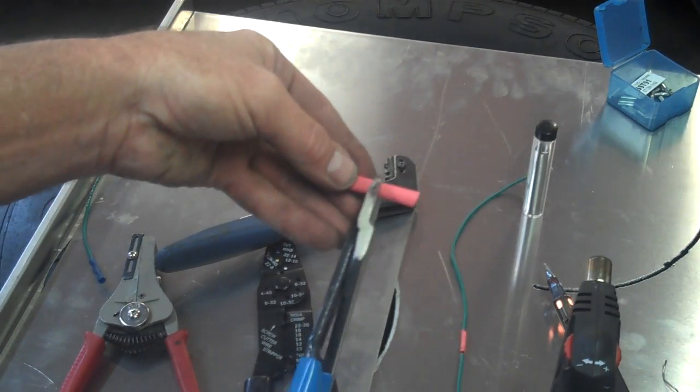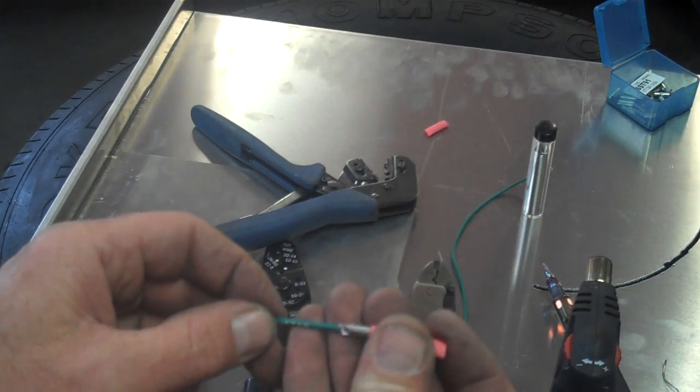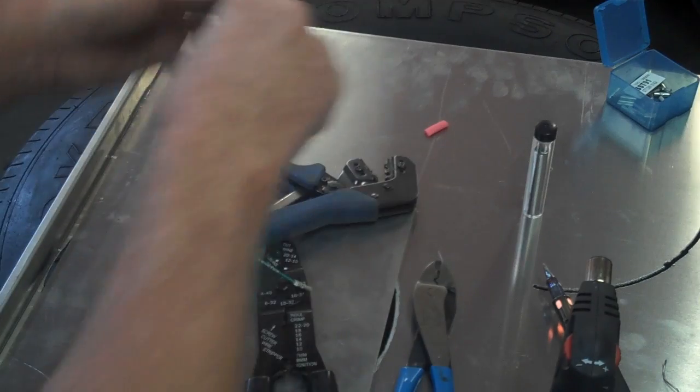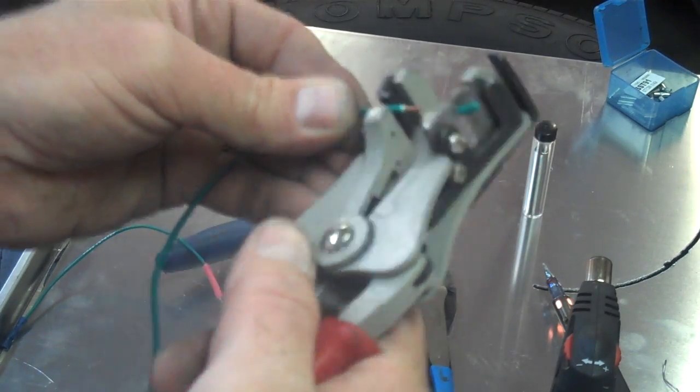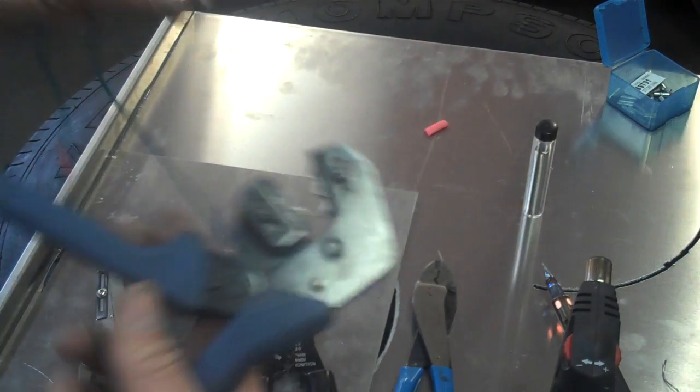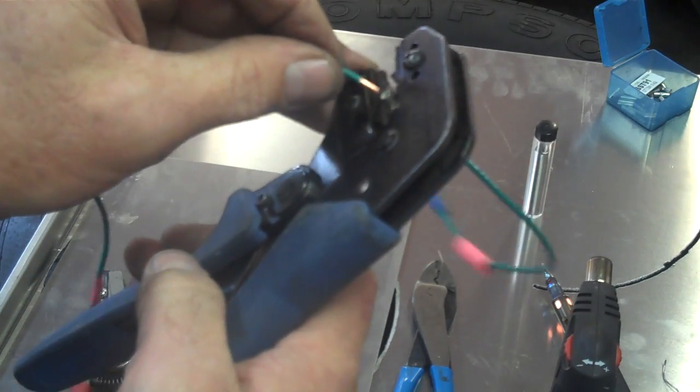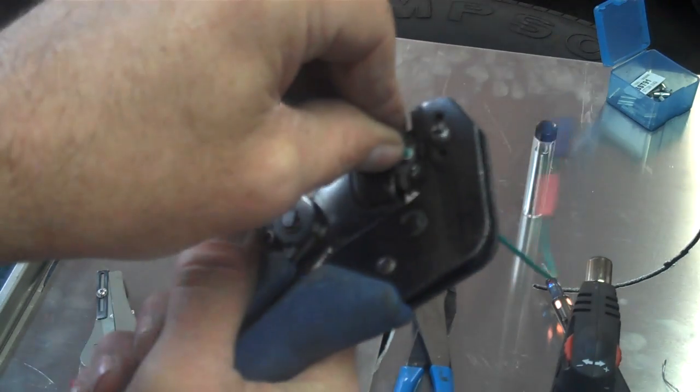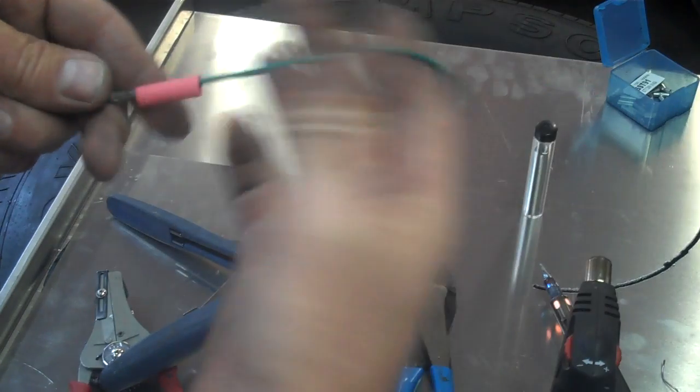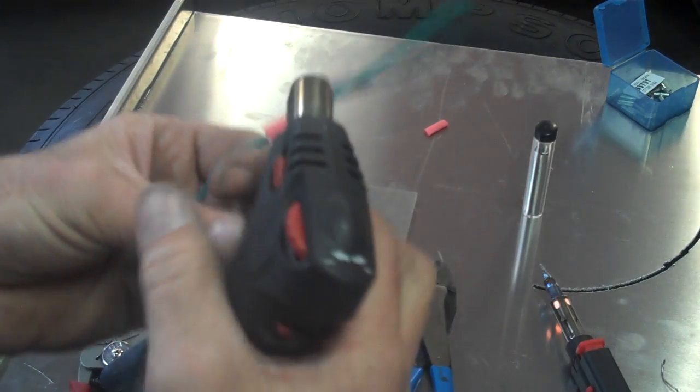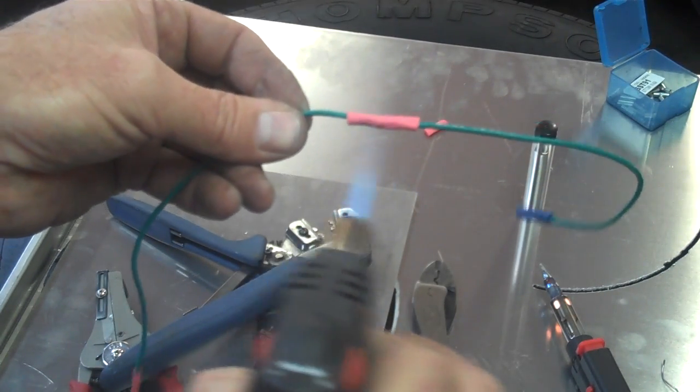Let's cut ourselves off another chunk of shrink tube. Put this on the wire. Strip this side. Put the terminal in the connector or the crimper. Wire in the terminal. Crush. Heat shrink tubing over it. Shrink the tubing.